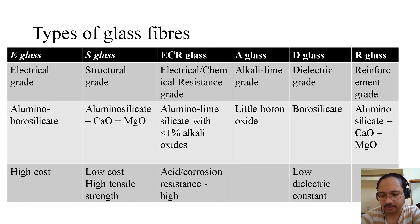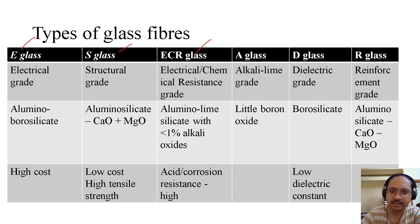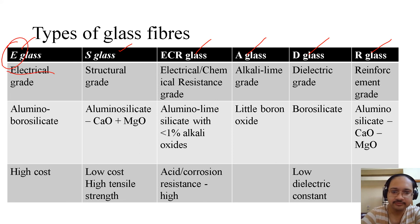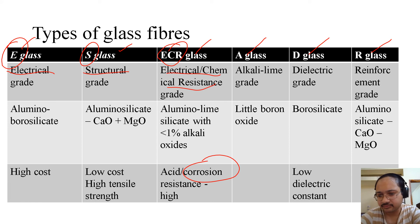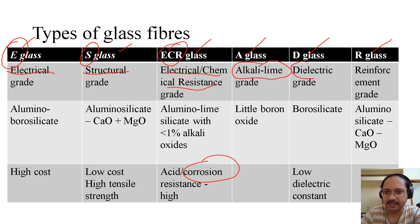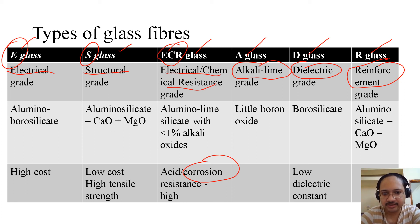Now, types of glass fibers — this is very important. There are different types: E-glass, S-glass, ECR glass, A-glass, D-glass, and R-glass. E stands for electrical, S stands for structural, ECR stands for electrical-chemical resistance, A-glass is alkali-lime, D-glass is dielectric, and R is reinforcement. So: E-glass electrical, S-glass structural, ECR electrical-chemical resistance, A-glass alkali-lime, D-glass dielectric, R reinforcement.